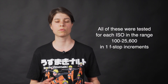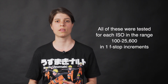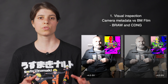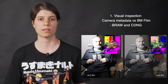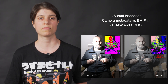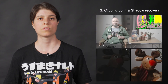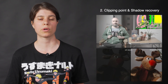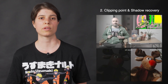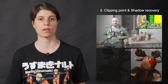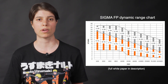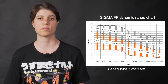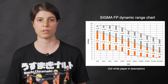These are the main things we'll be looking at in the next clips. 1. The visual difference between the RAW file decoded using camera metadata and BMFilm for B-RAW and CDNG. 2. Clipping point and shadow recovery, also known as headroom and legroom. This is the official Sigma FP dynamic range, so this is roughly what I'm expecting from my results in terms of headroom and legroom.